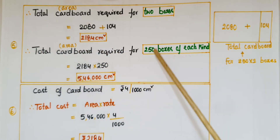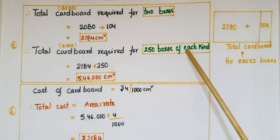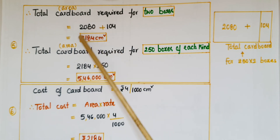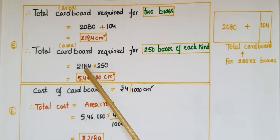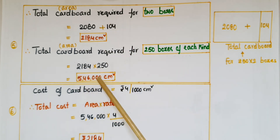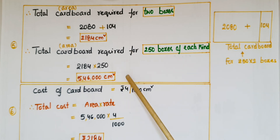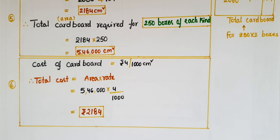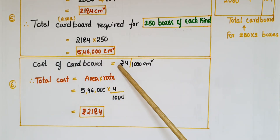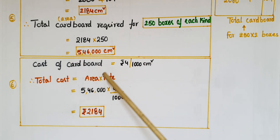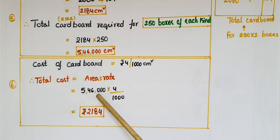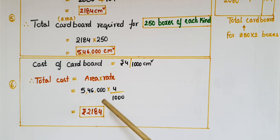For 250 boxes of each kind, that is 500 boxes total, but since we already calculated for two boxes combined, total cardboard = 2184 × 250 = 5,46,000 cm². Total cost = area × rate = 5,46,000 × (4/1000) = ₹2,184. This is the total cost of cardboard required for supplying 250 boxes of each kind.